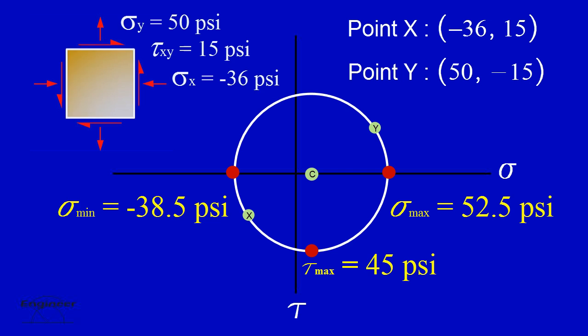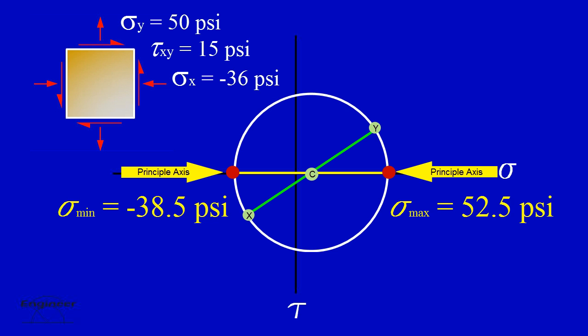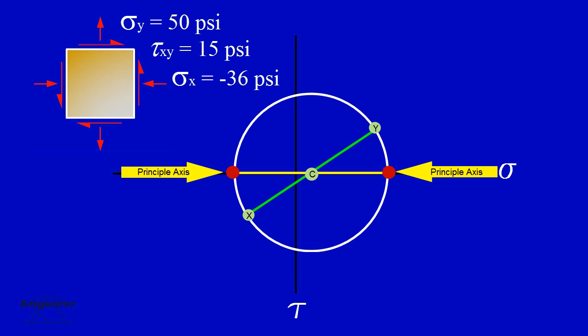Having solved for all the stresses, let's take this problem one step further by applying it to the element. The axis on which the maximum and minimum normal stresses occur is referred to as the principal axis. The current position of the element is shown as the line X-Y on Mohr's Circle, which is at an angle to the principal axis. The angle from the line X-Y to the principal axis is referred to as the principal angle. Reference the x-face of the element and point X to determine the rotation of the element to its principal angle.